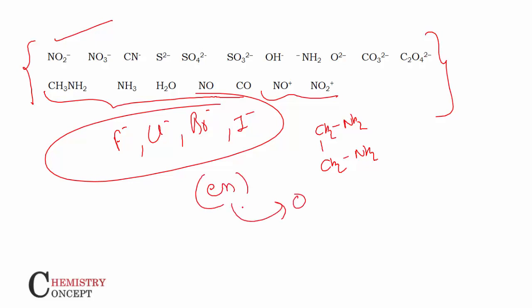Ethylenediamine (en), written as NH2-CH2-CH2-NH2, is a neutral ligand — it doesn't have any charge on it. Once you know the charges on the ligands, we can calculate the metal oxidation state very easily. Let's start.